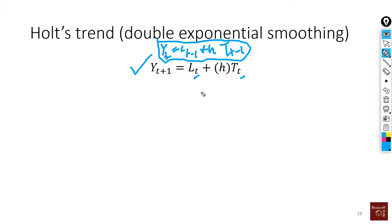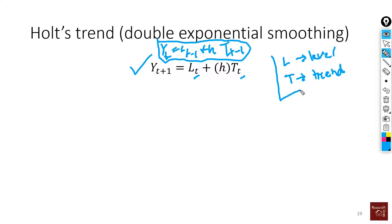What we are doing is decomposing the main time series data into two components: L for level and T for trend. We normally use this method when our data has some trend but does not have any seasonality.